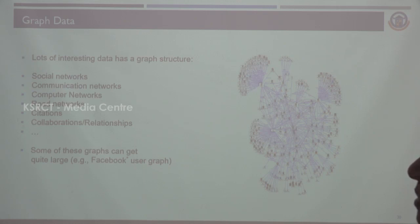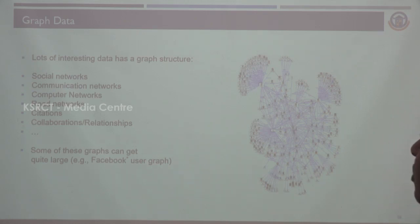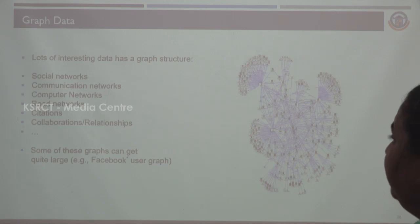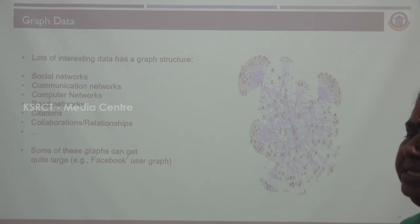An interesting thing is that data is visualized by using graphs. A lot of interesting data has a graph structure: social networks, communication networks, computer networks, road networks, citations, collaborations, and relationships. These are visualized using graphs.